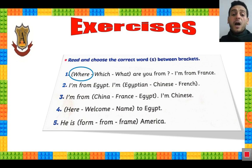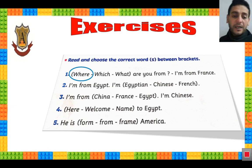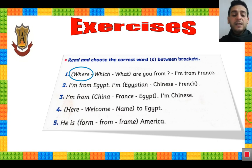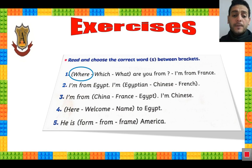Number 2: I am from Egypt. I am Egyptian. Excellent. Number 3: I am from China / France / Egypt. I am Chinese. Excellent — I am from China.